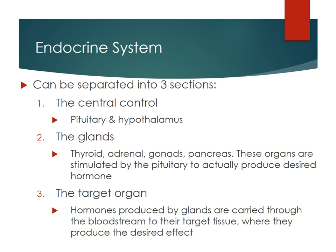The endocrine system can be separated into three sections. The central control, which is the pituitary and the hypothalamus — these two located in the brain — which control the rest of the endocrine system. We can also talk about the glands, like the thyroid gland, the adrenal glands, the gonads, and the pancreas. These are organs stimulated by the pituitary to produce a desired hormone. And then there's the target organ, where hormones produced by these glands are carried through the bloodstream and hit the target tissue to produce a desired effect.